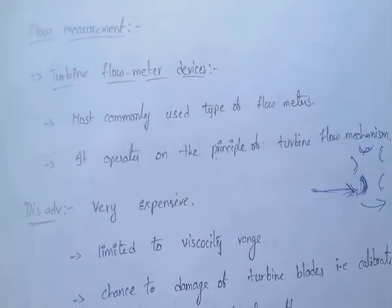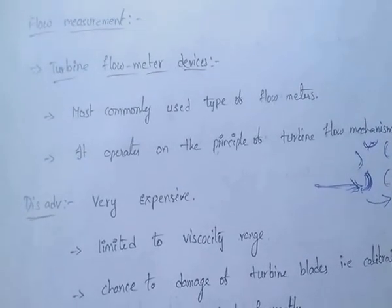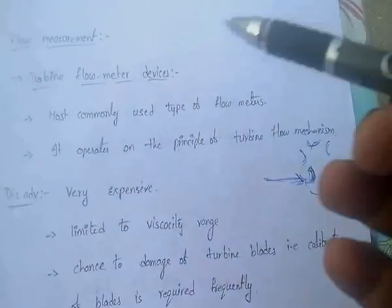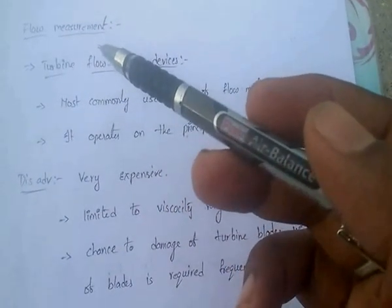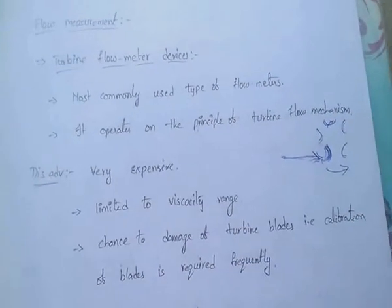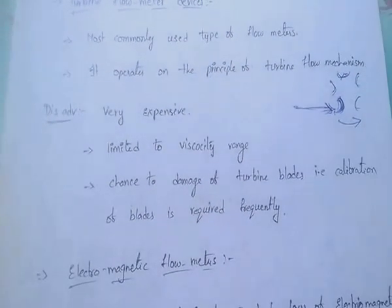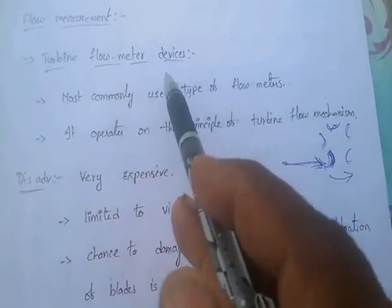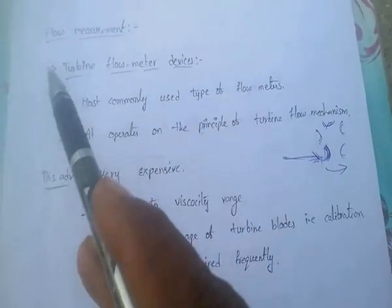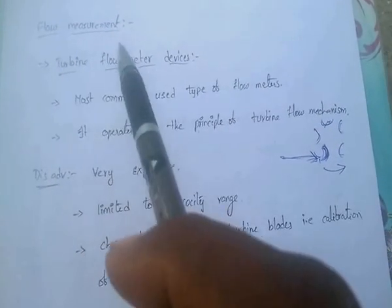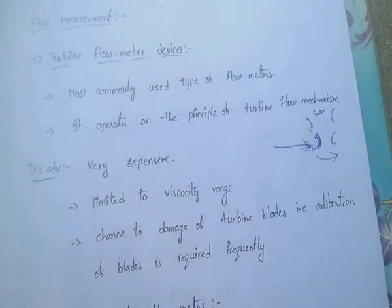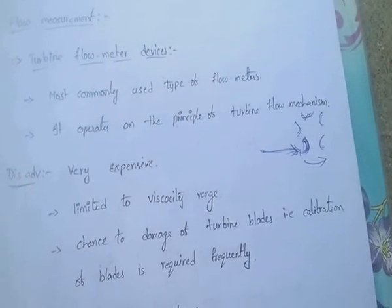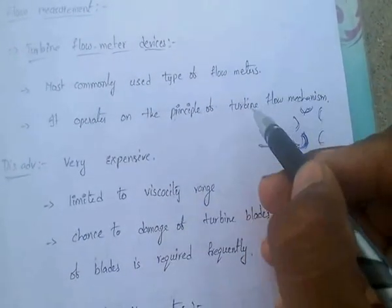Next, flow measurement. In flow measurement there are mainly two types of flow meter devices: first, turbine flow meter devices, and second, electromagnetic flow devices. The turbine flow meter is the most commonly used type of flow meter. It operates on the principle of the turbine flow mechanism.